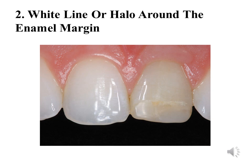Another problem is a white line or hollow around the enamel margin. As seen in this picture, a line surrounds the composite resin restoration at the enamel. These lines sometimes appear after completing the filling. The solution is to repeat the procedures of acid etching and bonding for the enamel, then repeat placing the restoration again.